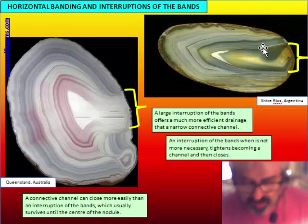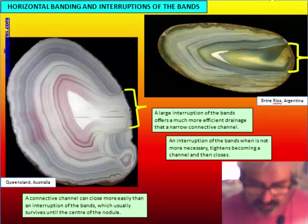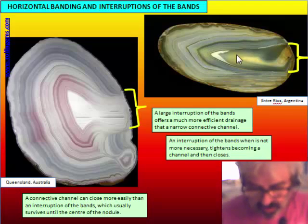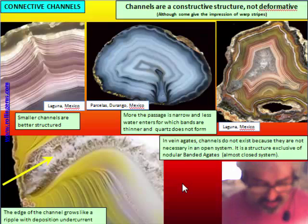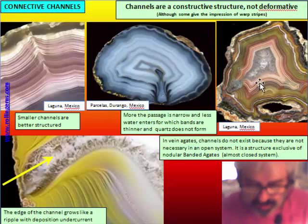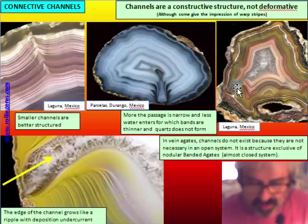This is the typical situation where a lateral interruption of the band is responsible for horizontal banding. Then, in a second stage, we have concentric banding on the top and the interruption of the band starts to close. Connective channels are also a way for the water to enter, but because they are smaller, they are less efficient. There is a transition between a large interruption of the band and a small one — like a big channel.